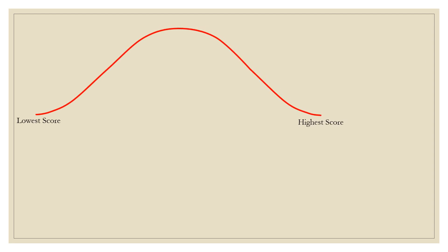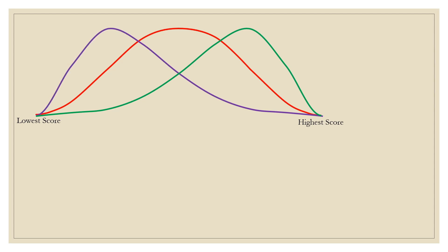Consider this distribution. If we draw another distribution, which is considered to be a negatively skewed distribution, and another distribution which is a positively skewed distribution. If we are to locate the centermost value of these distributions, then we will obtain the same location, and that is called our median. This location, or median, divides the data set into two equal divisions.